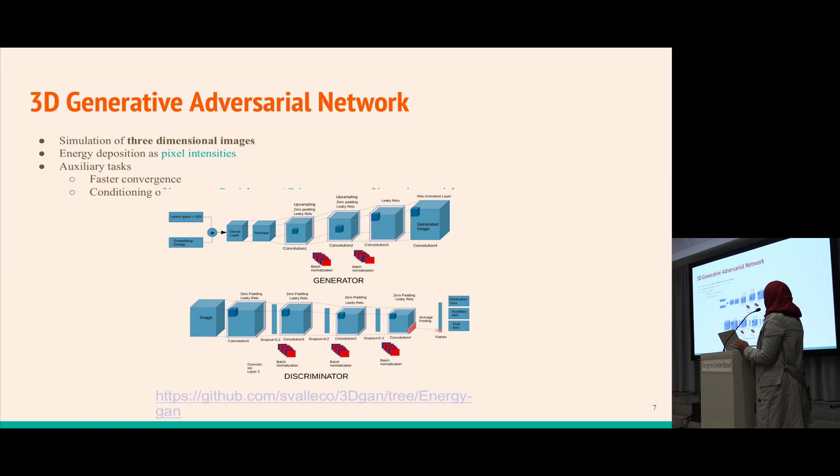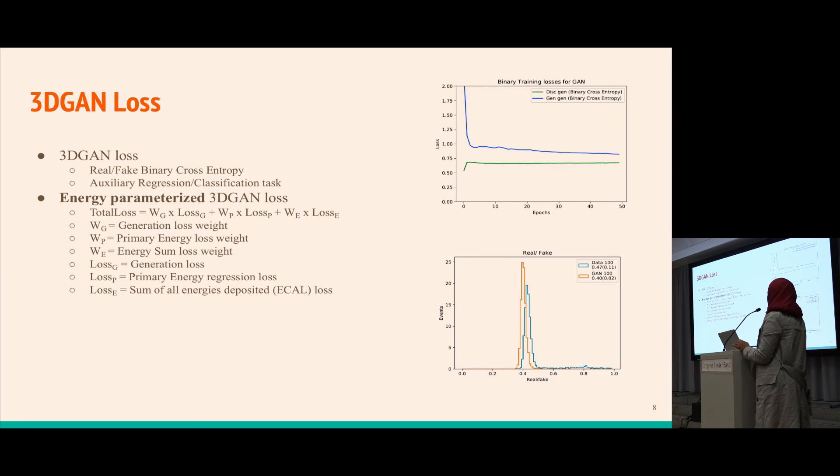Our training aim is that the discriminator should be confused between generated and data images. We see the generator loss decreases and discriminator loss increases into a stable situation, with discriminator output showing total confusion between real and generated images. We use different types of losses including percentage loss and binary cross entropy with weights for correct weighting.